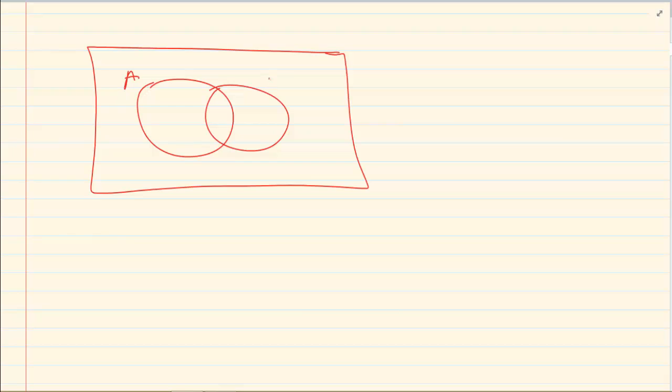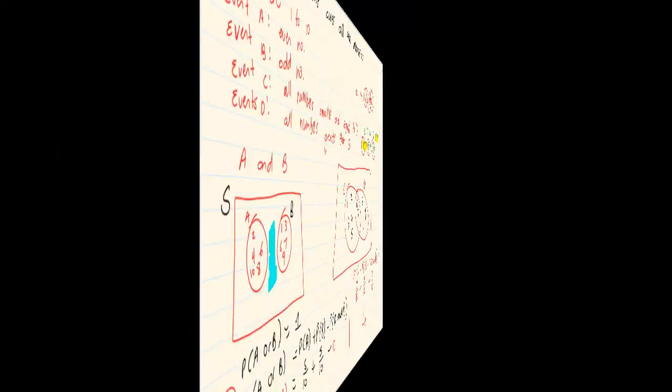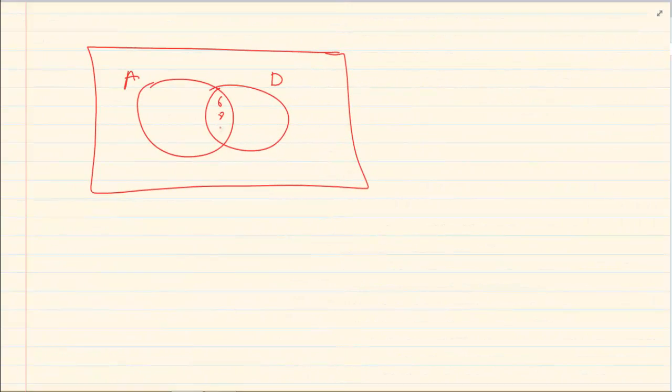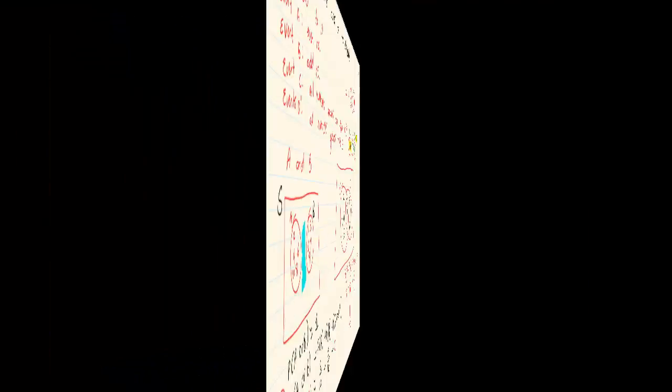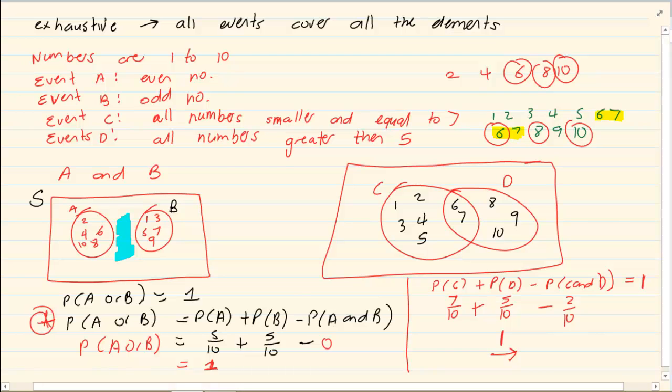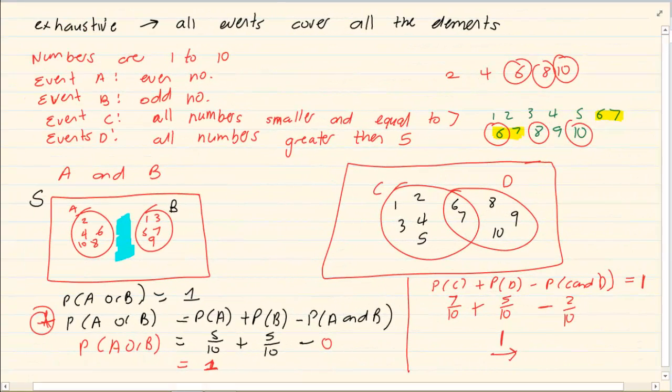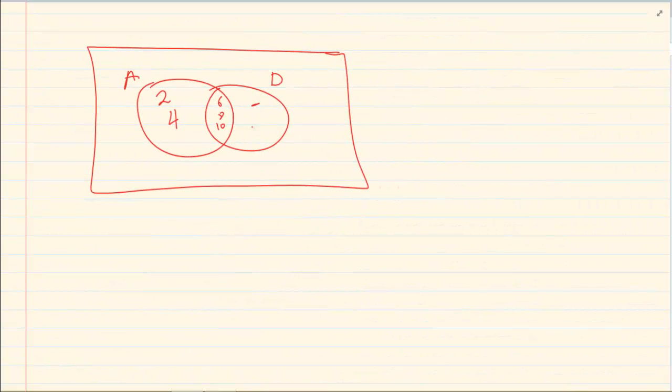What do we have in our 2 circles? So we have event A and we have event D. We have 6, 8 and 10 that's common. Then for event A we still have 2 and 4. And for event B we still have 7 and 9. But we know we are counting from 1 to 10. So we have 1 is out, 2, 3 is out, 4, 5 is out, 6, 7, 8, 9, 10.